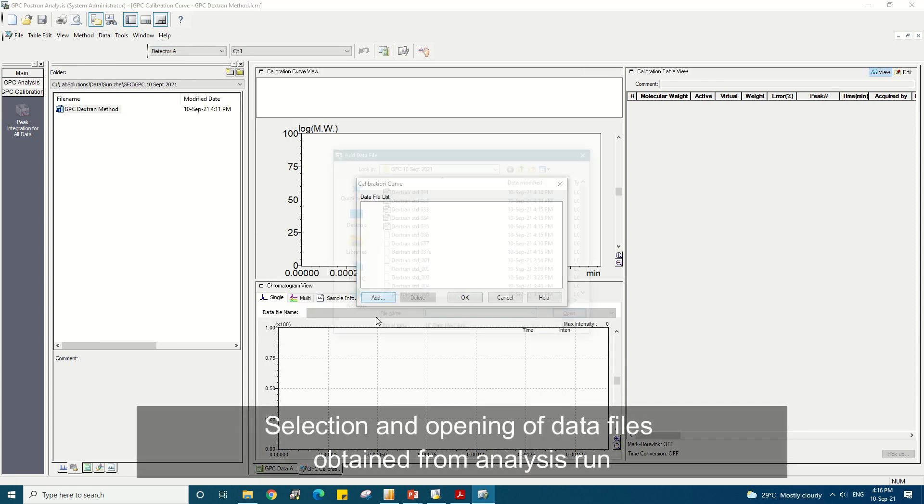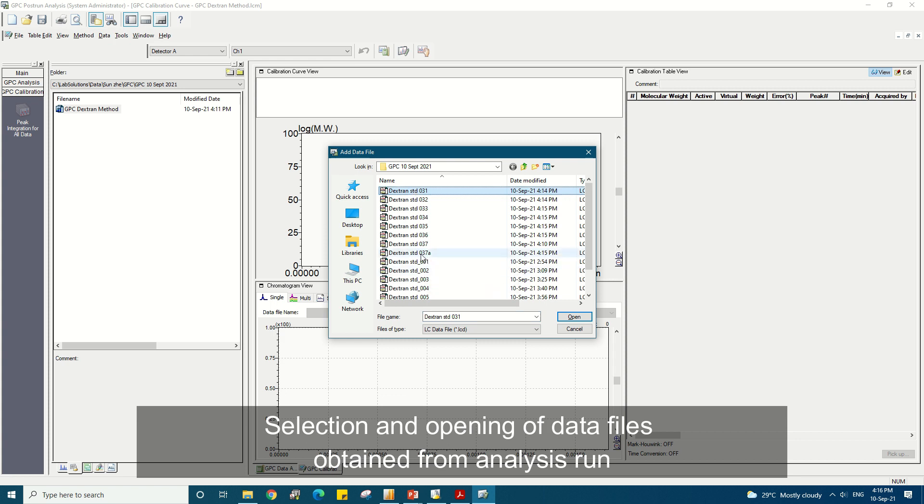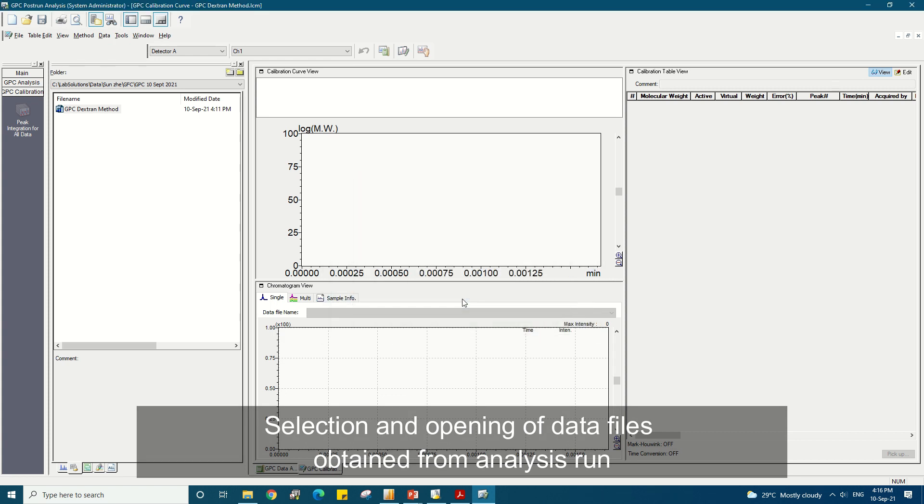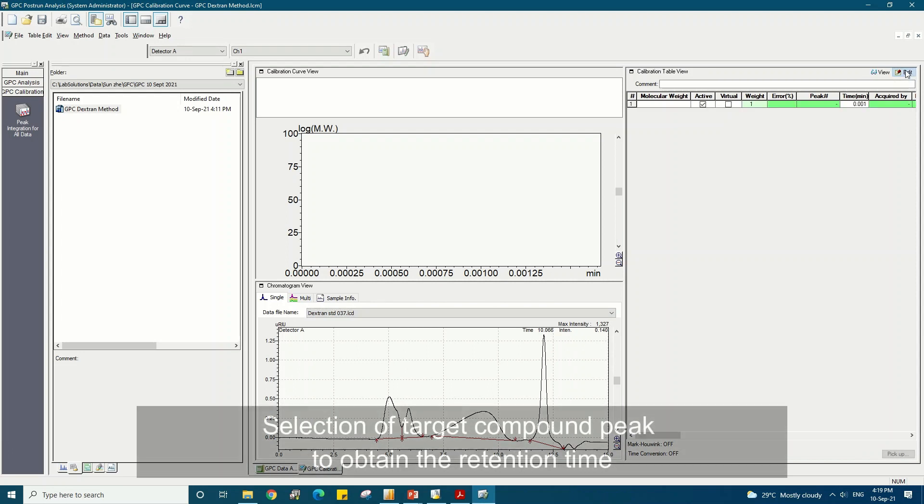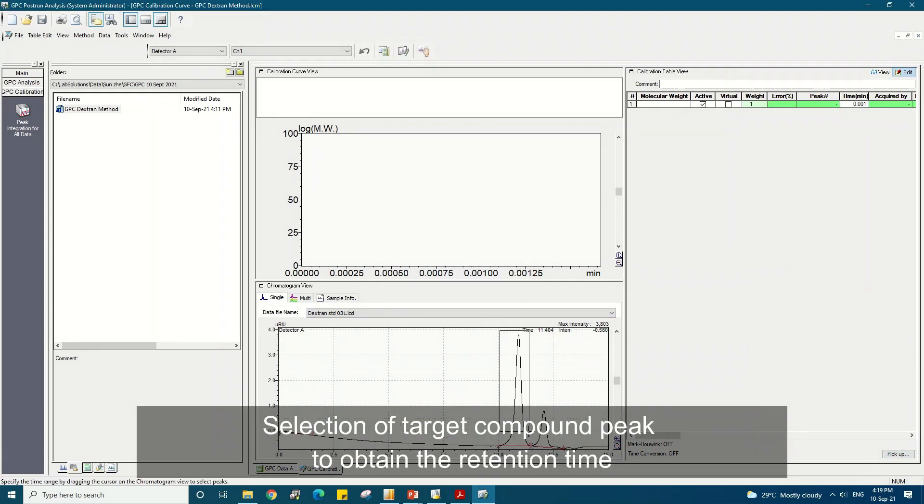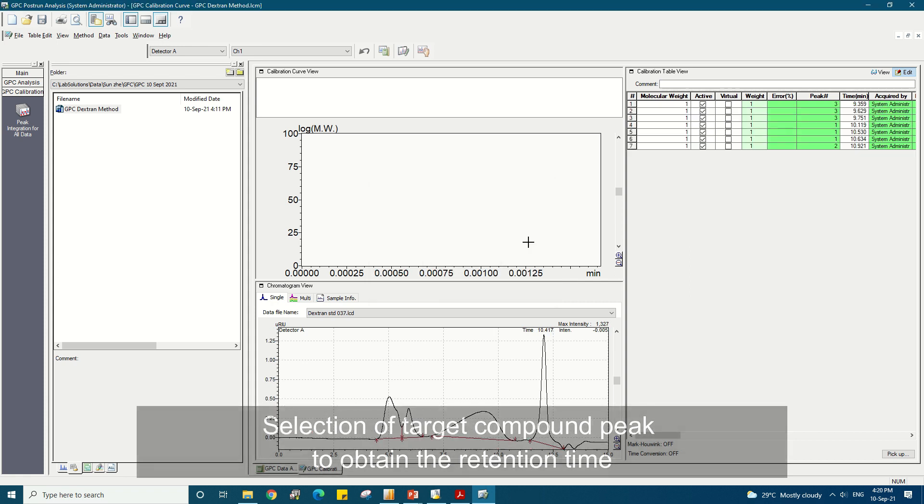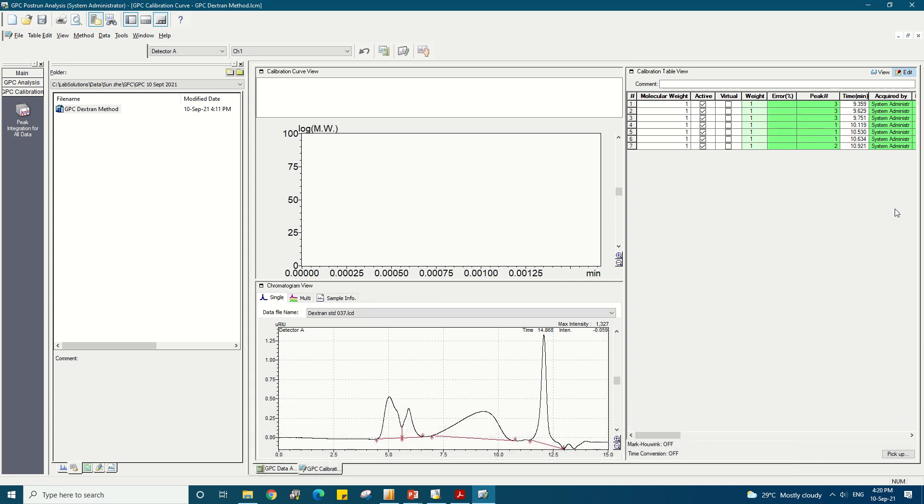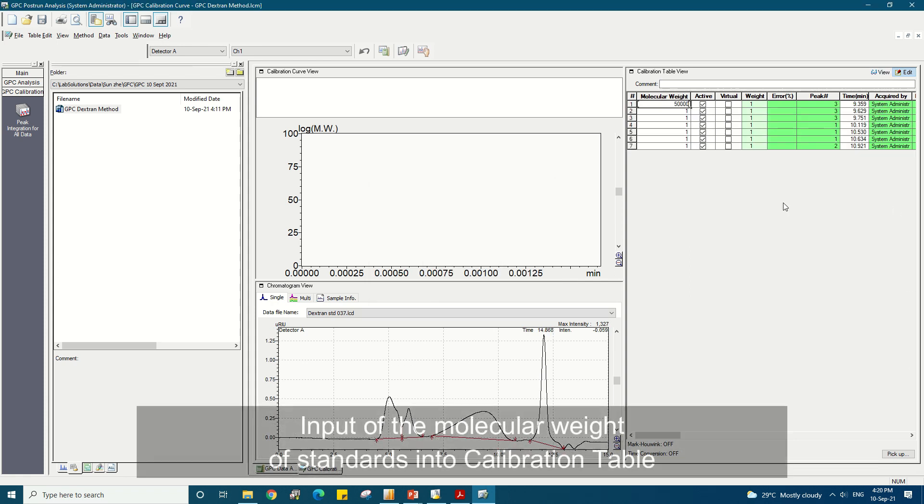In the data file list under the data menu, add the raw data files of the standards. The retention time data of the target compound peak of each standard is selectively picked up and added in the edit mode of the calibration table. With the retention time inputted into the calibration table, fill in the molecular weights of each standard accordingly.